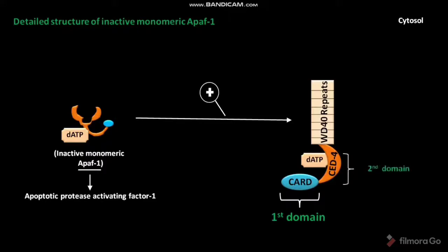The second domain is called the CED4. The DATP is generally present in a bound state to this CED4 domain. The third domain contains some WD40 repeats. The cytochrome C released from mitochondrion generally binds to the third domain.